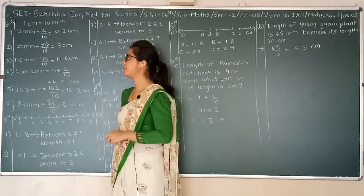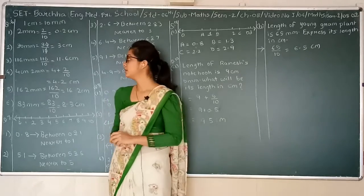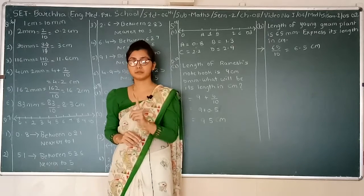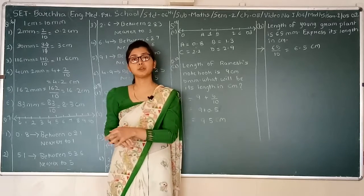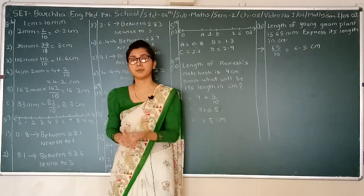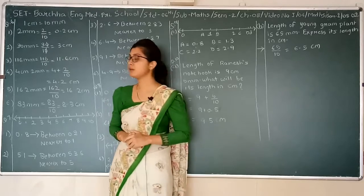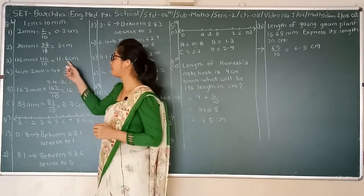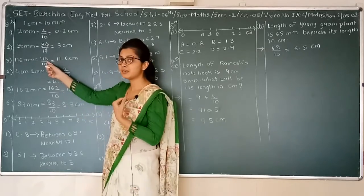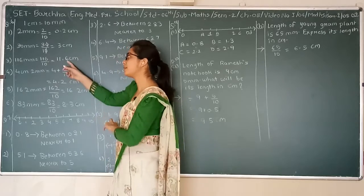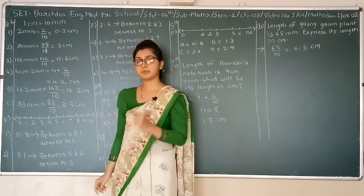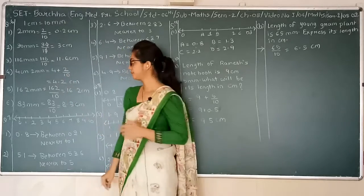Next one: 1.16 millimeters. 1.16 upon 10. There will be 1 number after the decimal point and the rest before it. So we extract 1 number from the right-hand side, which is 6. Therefore 11.6 centimeters will be the answer.